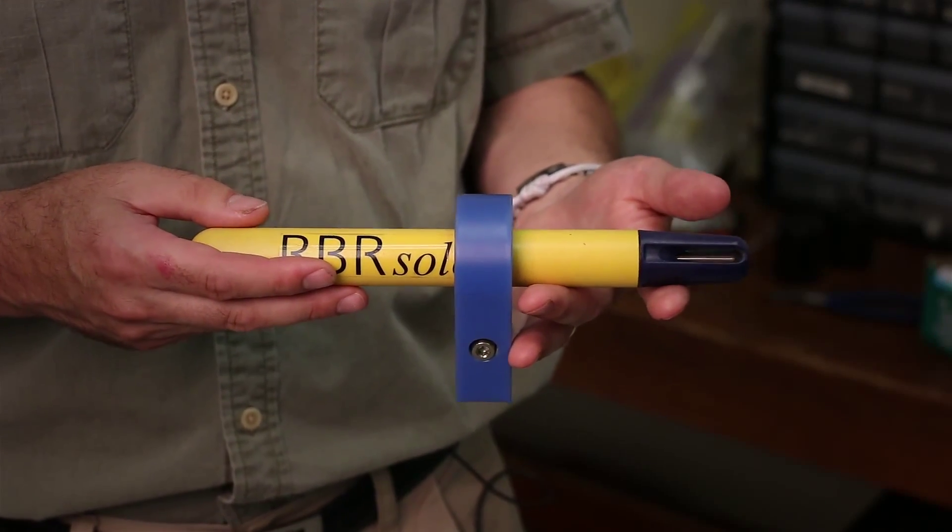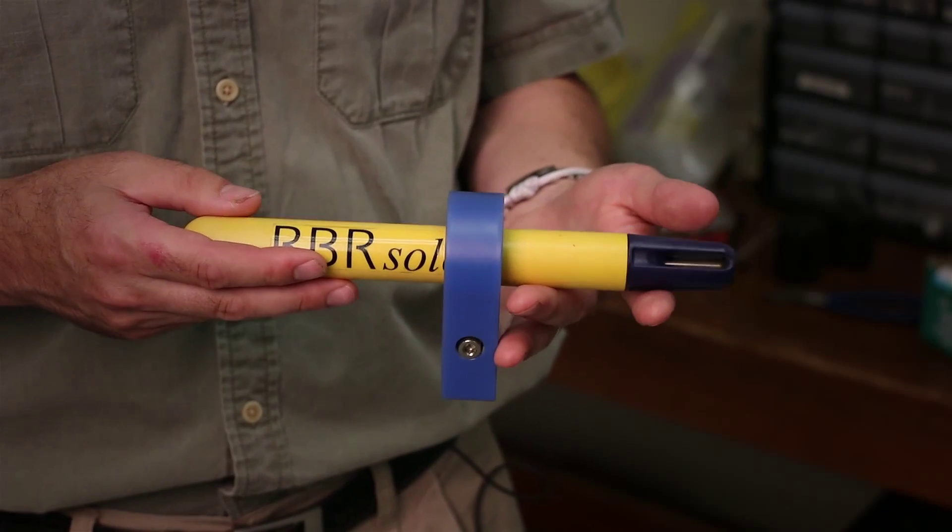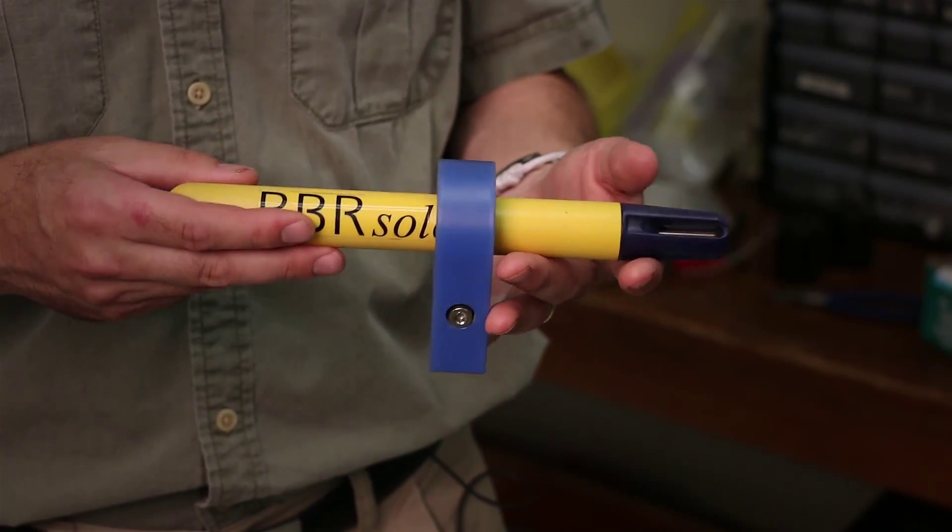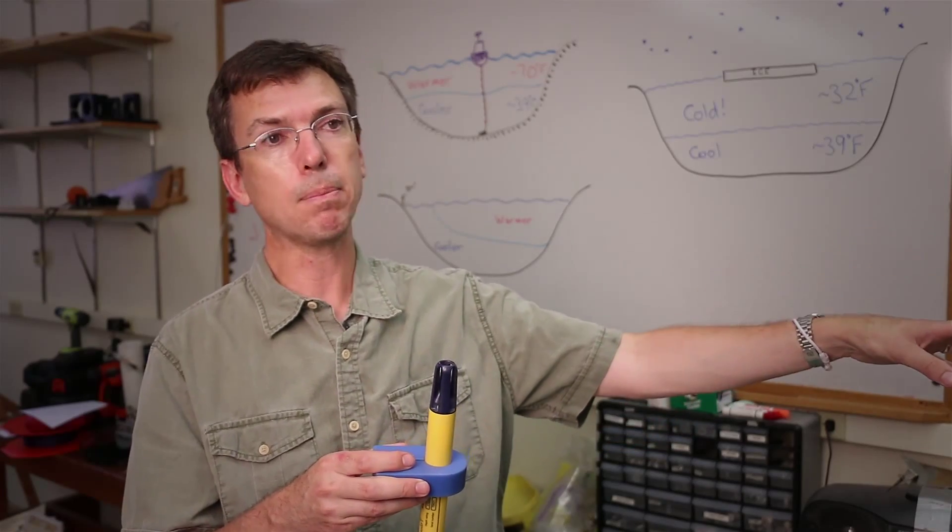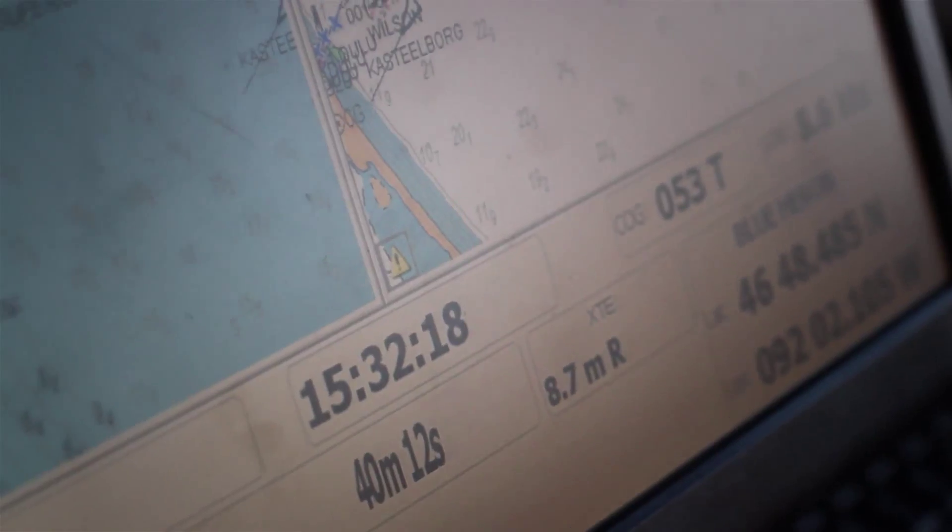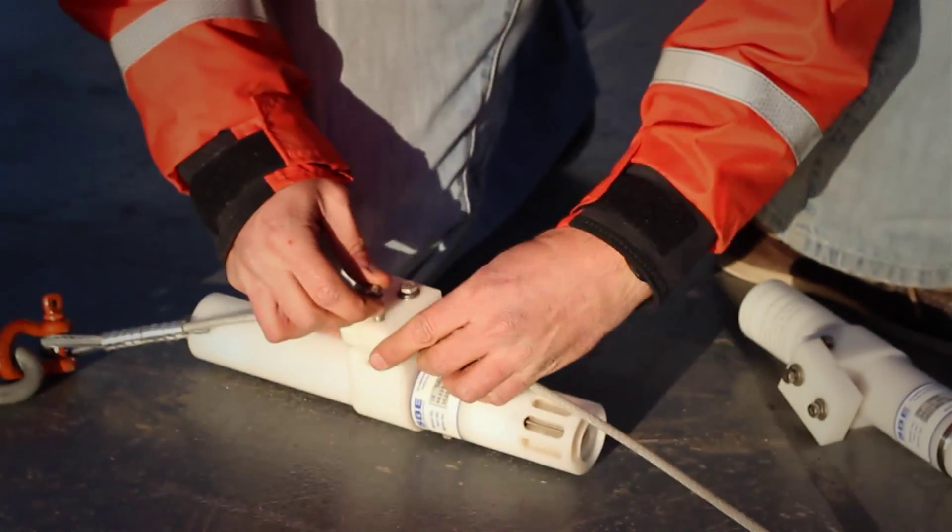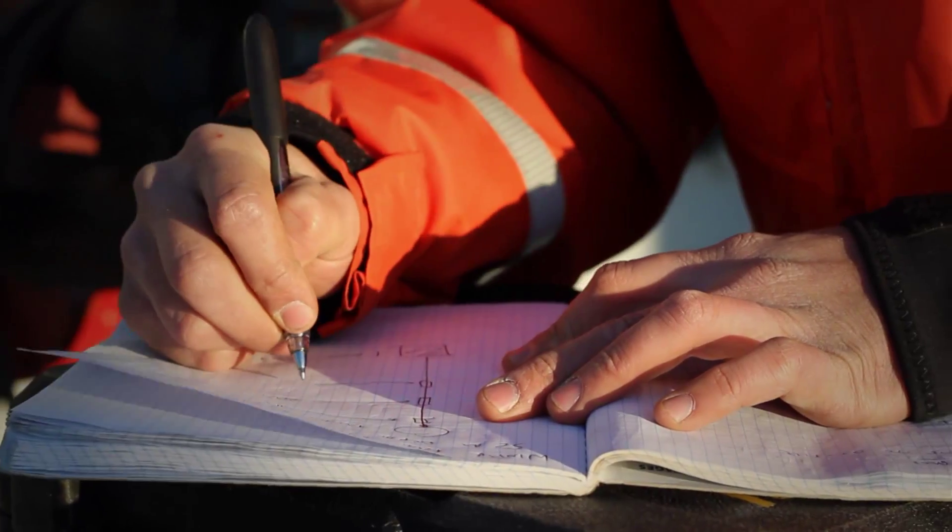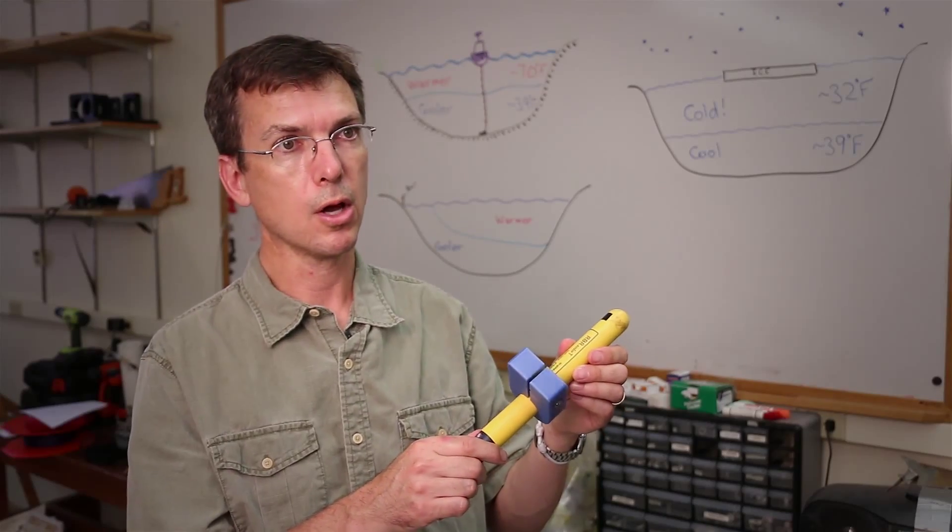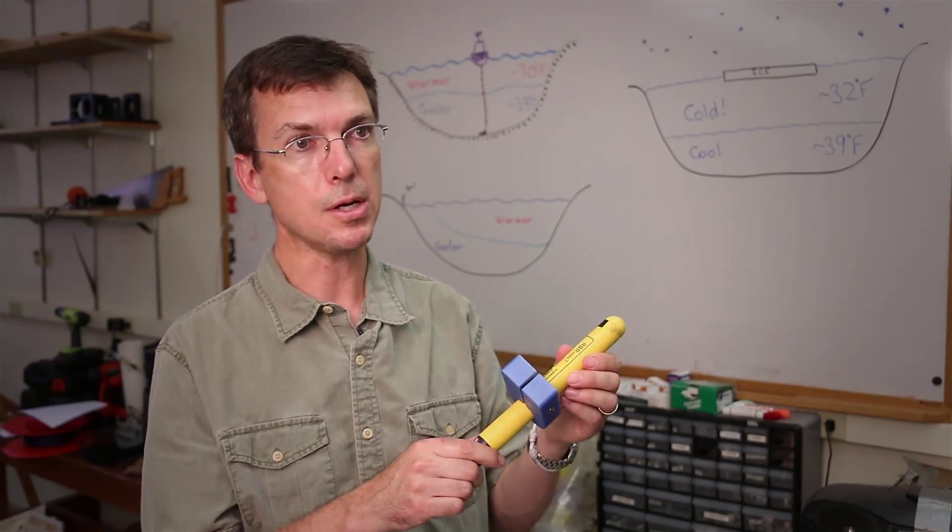This is an instrument called a thermistor. It's used to measure temperature very accurately in the water. We bolt it to a cable and deploy these instruments deep in the waters of Lake Superior, out in 500, 600, 700, 800 feet of water. We bolt these onto a cable, and there's a little computer in here that records the temperature. This records the temperature of the water once per second for up to three years.